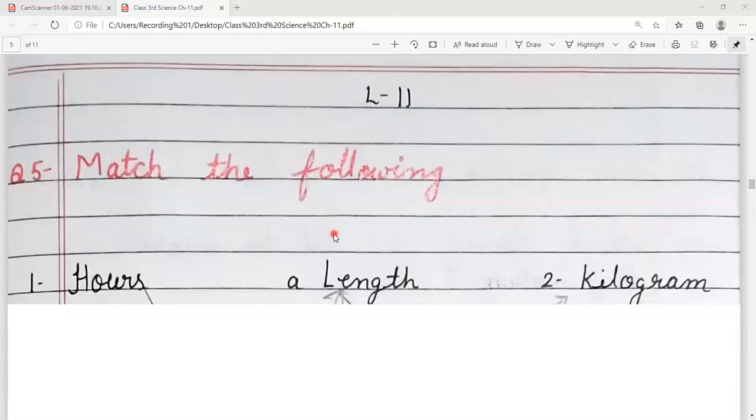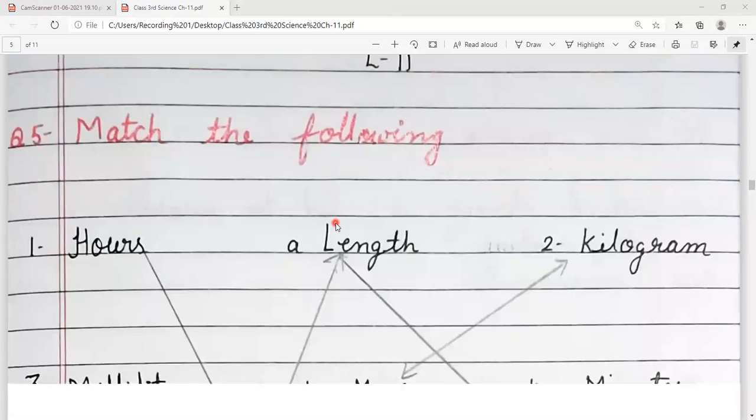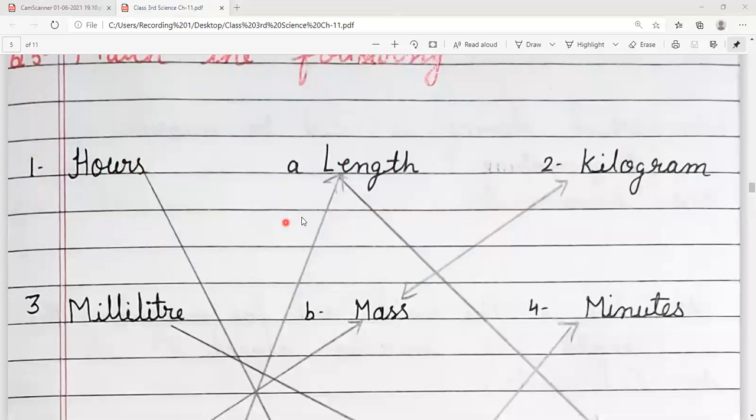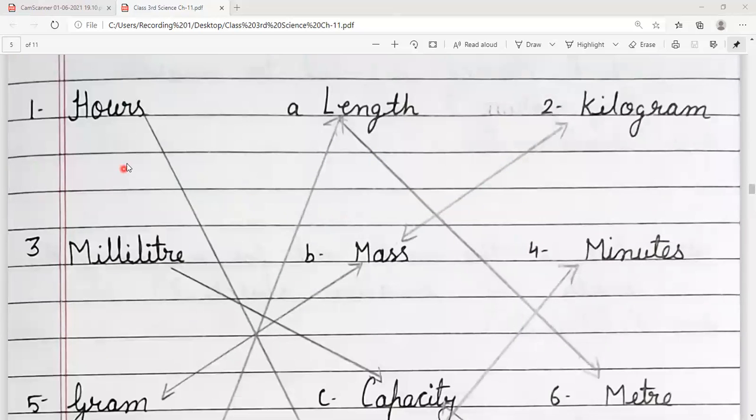Next question, number 5. Match the following. Ab isme hai humko question jo diye gaye hain, uske saath humein correct answers diye gaye hain. Means, har number ke do options hain. Humein match karna hai.